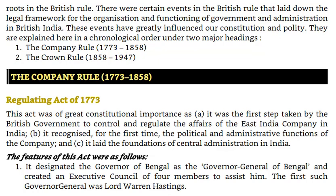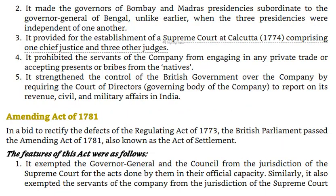The features of this act were as follows. 1. It designated the Governor of Bengal as the Governor-General of Bengal and created an executive council of four members to assist him. The first such Governor-General was Lord Warren Hastings. 2. It made the Governors of Bombay and Madras presidencies subordinate to the Governor-General of Bengal, unlike earlier when the three presidencies were independent of one another. 3. It provided for the establishment of a Supreme Court at Calcutta (1774), comprising one Chief Justice and three other judges. 4. It prohibited the servants of the Company from engaging in any private trade or accepting presents or bribes from the natives. 5. It strengthened the control of the British government over the Company by requiring the Court of Directors — the governing body of the Company — to report on its revenue, civil, and military affairs in India.